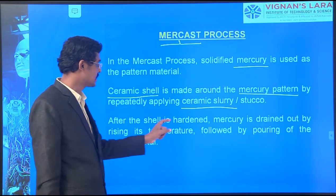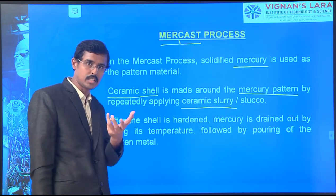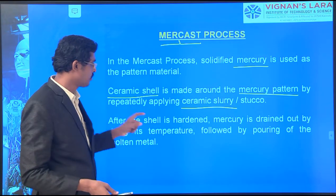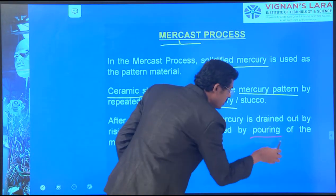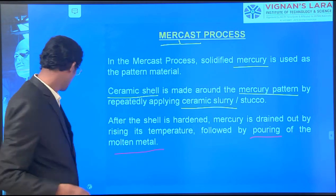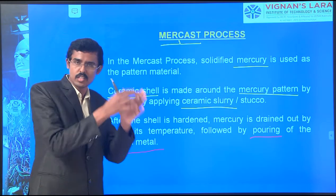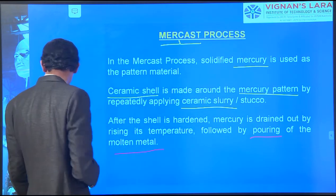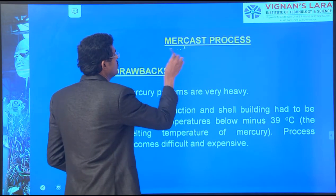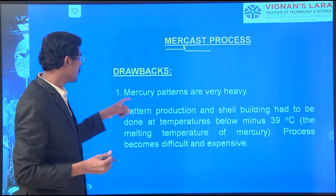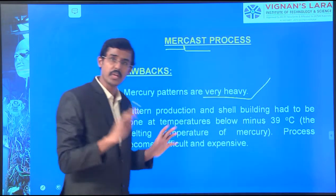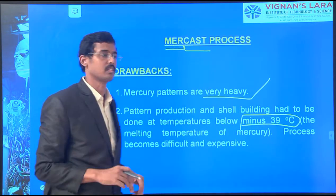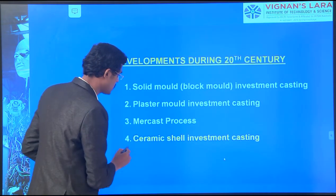After the shell is hardened, the ceramic shell is dried. Five times it is dipped and hardened. Mercury is drained out by raising the temperature, followed by pouring of the molten metal. The process is the same as others - but instead of wax, we have used mercury. The drawback of Mercast: the mercury pattern is very heavy, and maintaining minus 39 degrees for pattern production and shell building is very difficult. So we are not doing this.